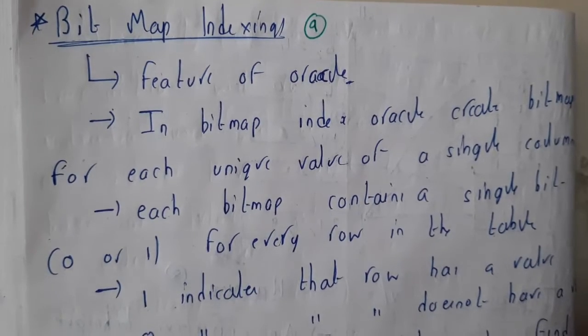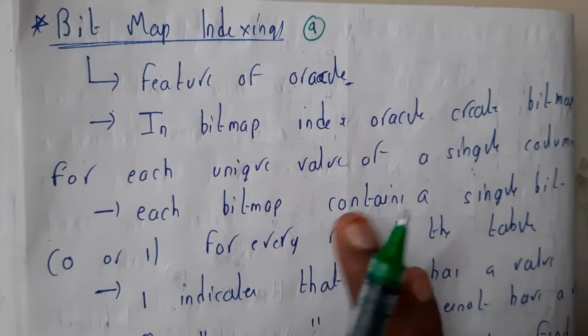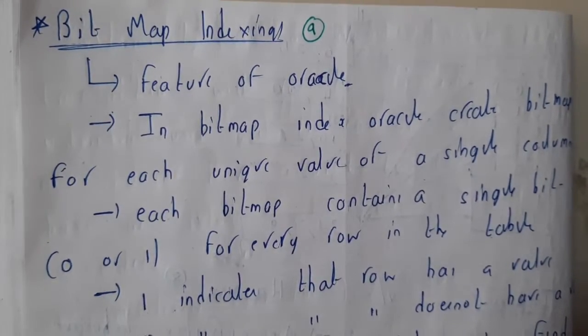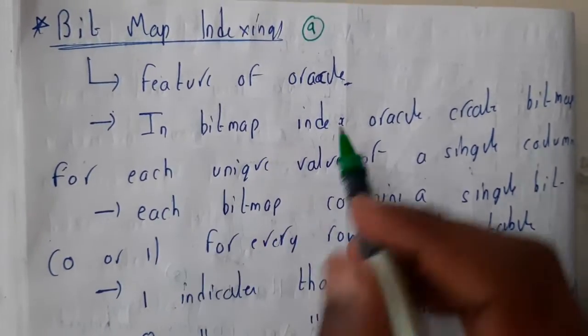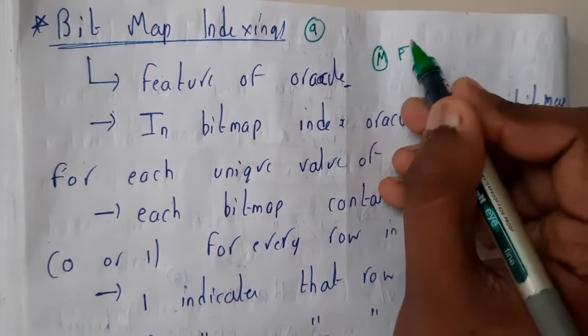Basically, whenever it is true or false, we will be inserting yes or no. Those two things which we will be inserting will be under this bitmap indexing. Let us assume male or female. Let us assume male as one and female as two. In this way, only two option things will be stored in this bitmap.